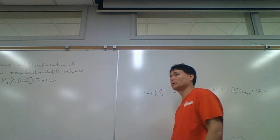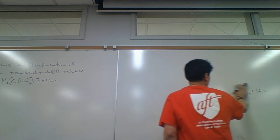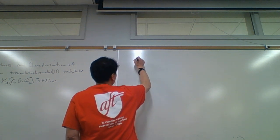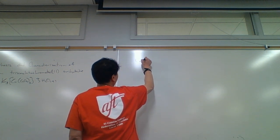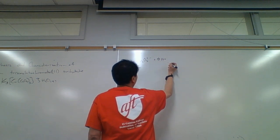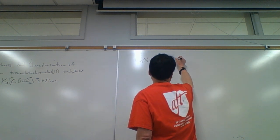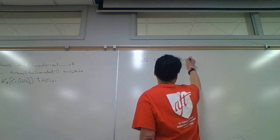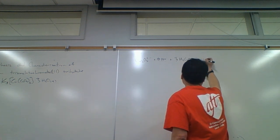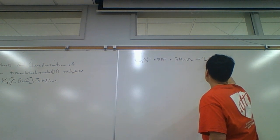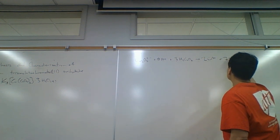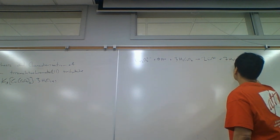So it's not quite balanced. Did you get it? I think so. What did you get? I got one dichromate plus eight H⁺ plus three oxalic acid yields two Cr³⁺ plus seven H₂O plus six CO₂ gas.